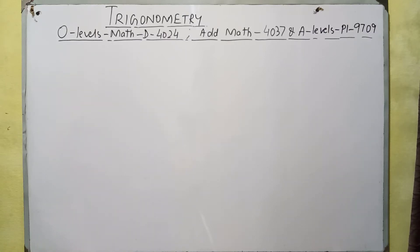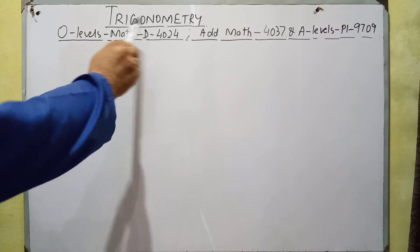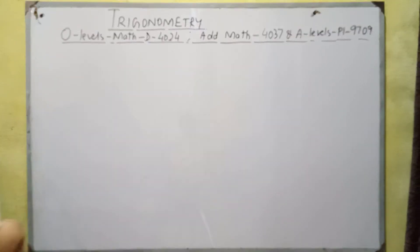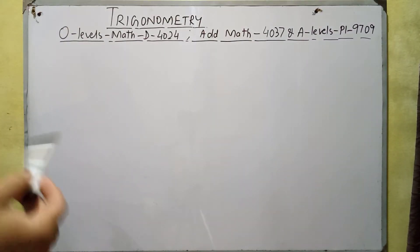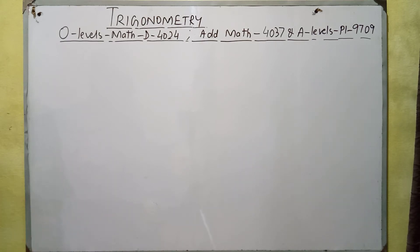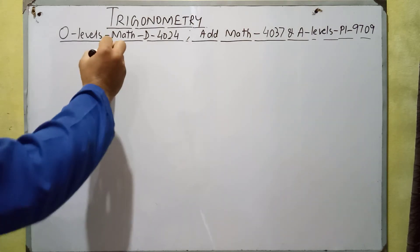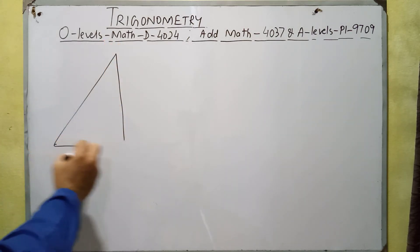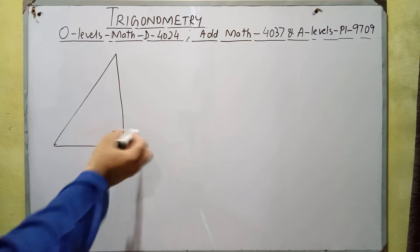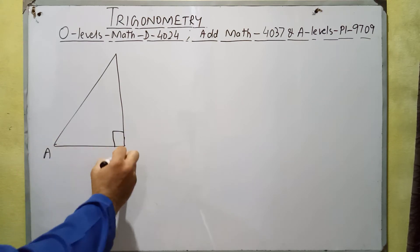Hello dear students, today we will study about trigonometry. It is basically the measurements about triangles, because 'trigon' means triangle and 'metric' means measurements. So trigonometry is basically the measurements about triangles, and we will start from a right angle triangle. This is a right angle triangle in which we have a 90 degree angle.